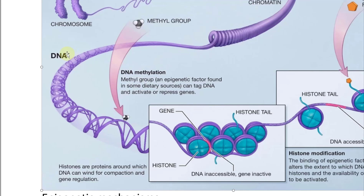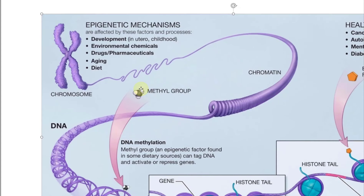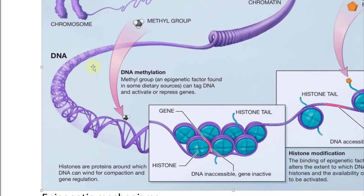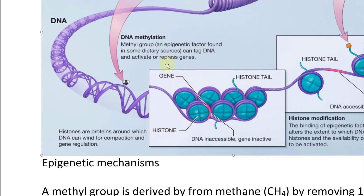You have DNA and then the mechanism of DNA methylation. A methyl group is an epigenetic factor found in some dietary sources that can tag DNA and activate or repress genes. You're not actually changing the sequence, but this molecule attached to it can activate or repress the genes.